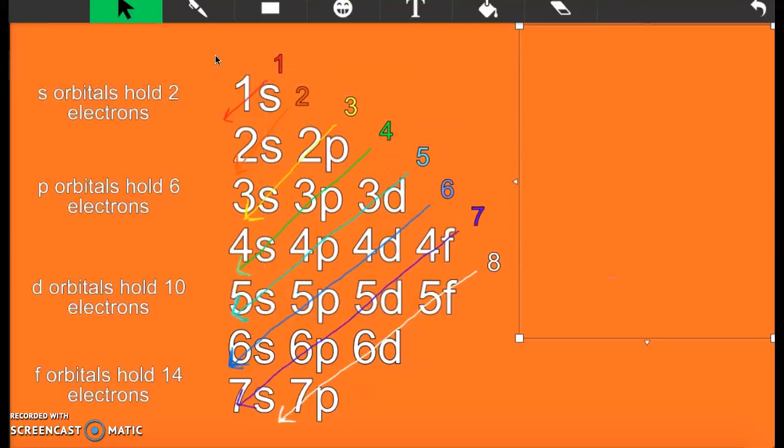You start up here at the top, at 1s. You go down the diagonal line, 1s, which holds 2 electrons. So after you have your second electron and you have a third, go to number 2. Your orange line, which in the rainbow comes after red.